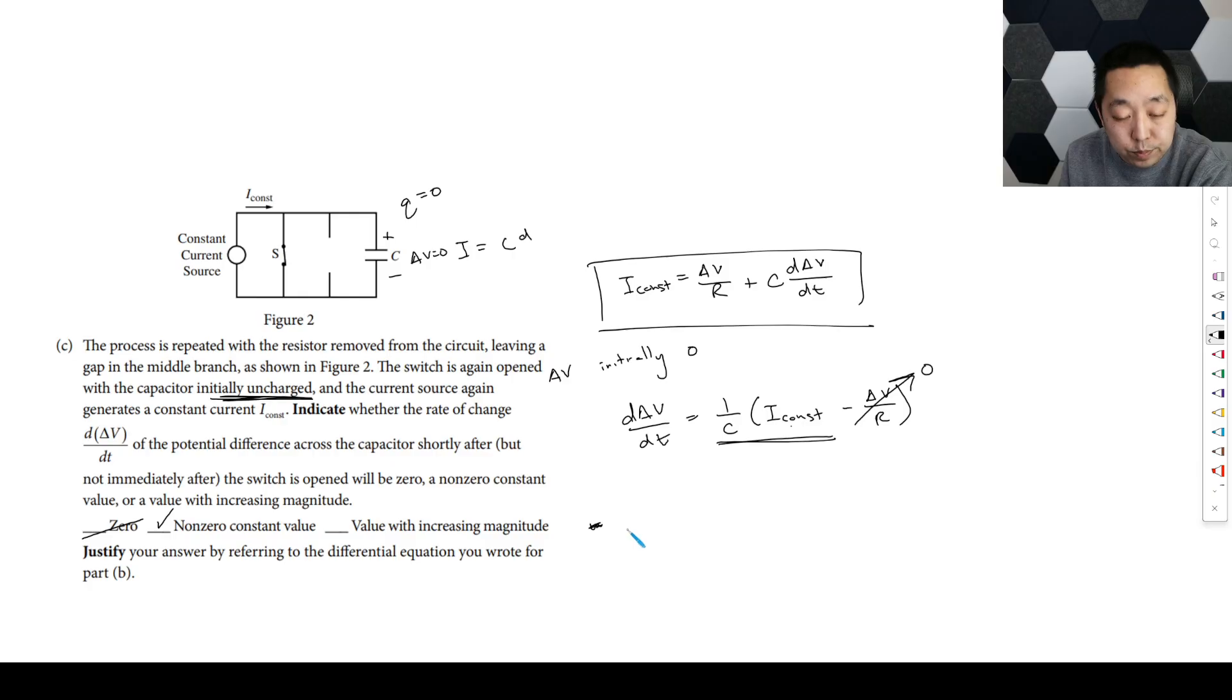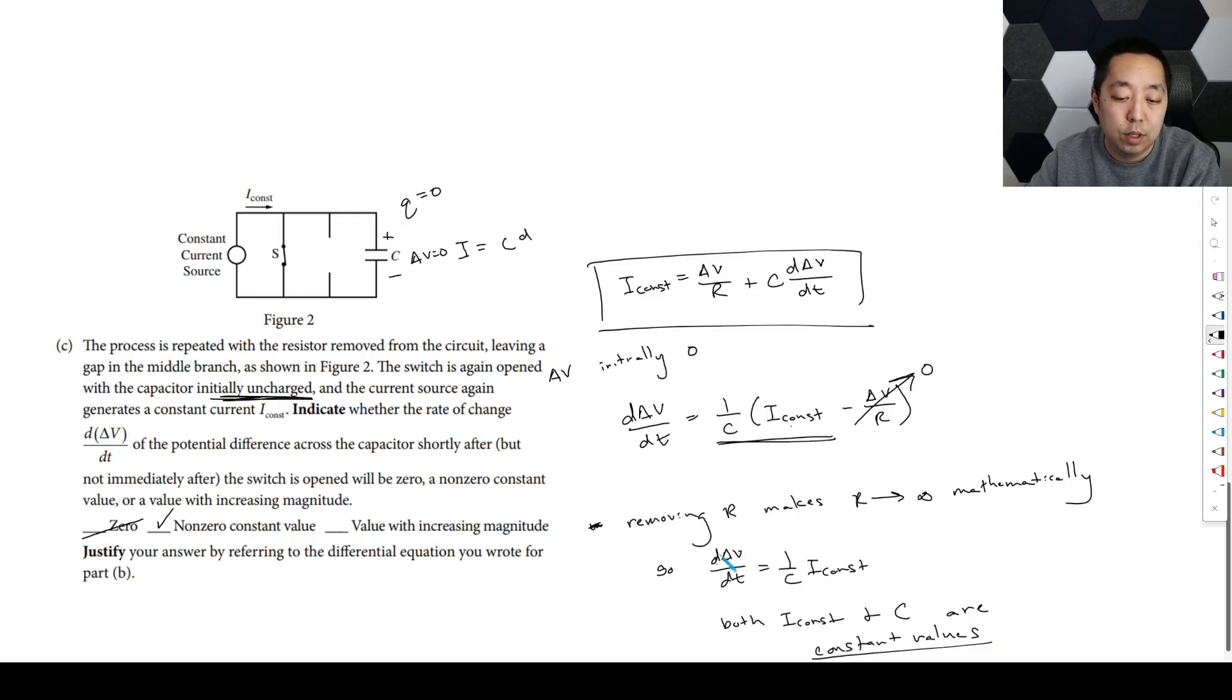And you just want to justify by using your differential equation, saying that with removing the resistor, removing R makes R go to infinity, mathematically, because it's like you have infinite resistance, it's not going to pass through there at all. So dV/dt equals one over C times I const. And both I const and C are constant values. Okay, and so therefore, this thing is going to be constant.